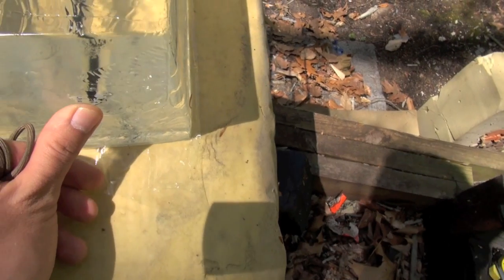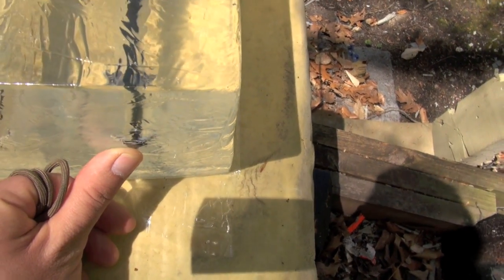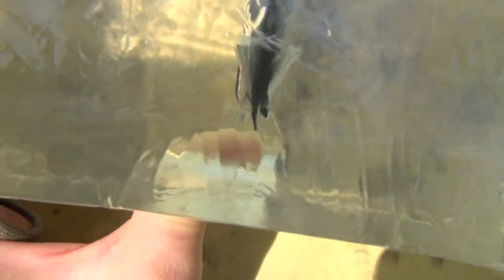This right here is the Simmons Landshark, and I can feel the tip of it right there. It's just on the outside of it. Over here is the Slick Trick. Oh, it's a good bit inside of there still. I can't feel it at all. It's about maybe an inch or so inside the ballistic gel.